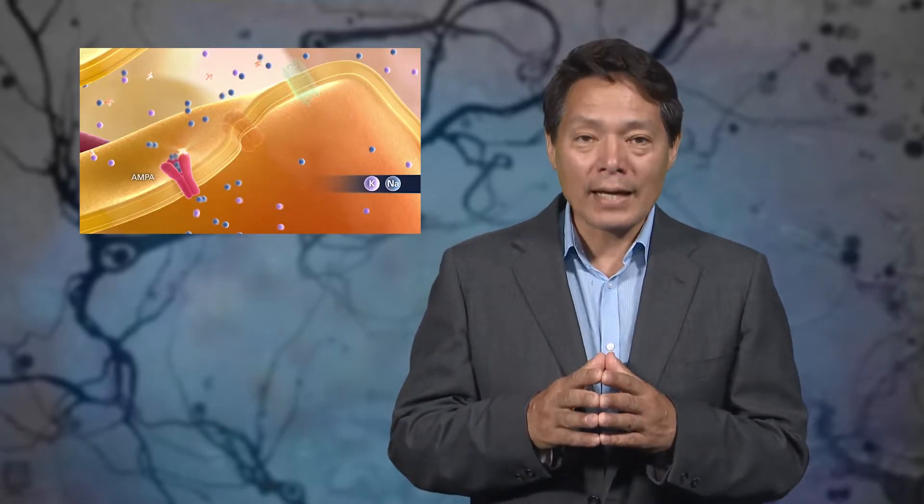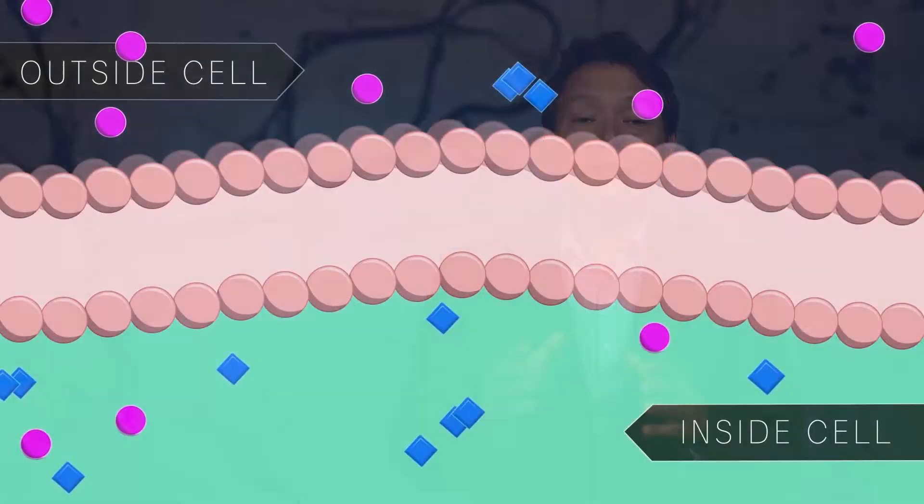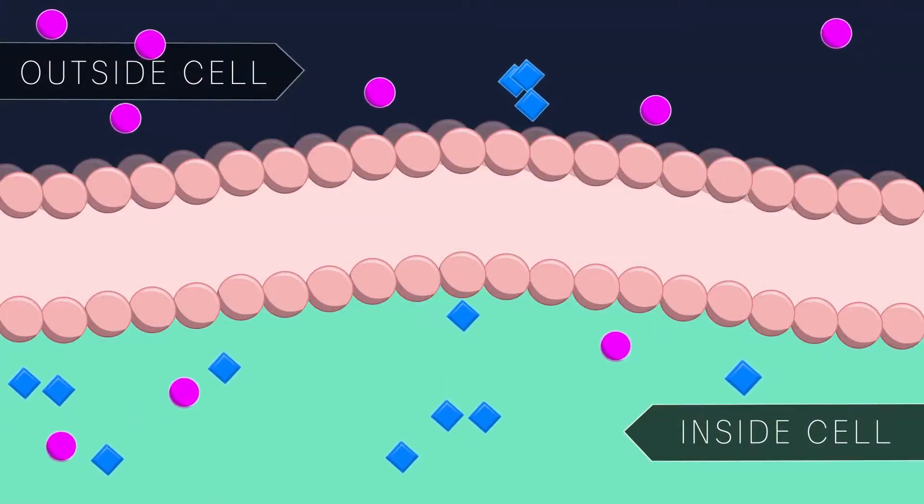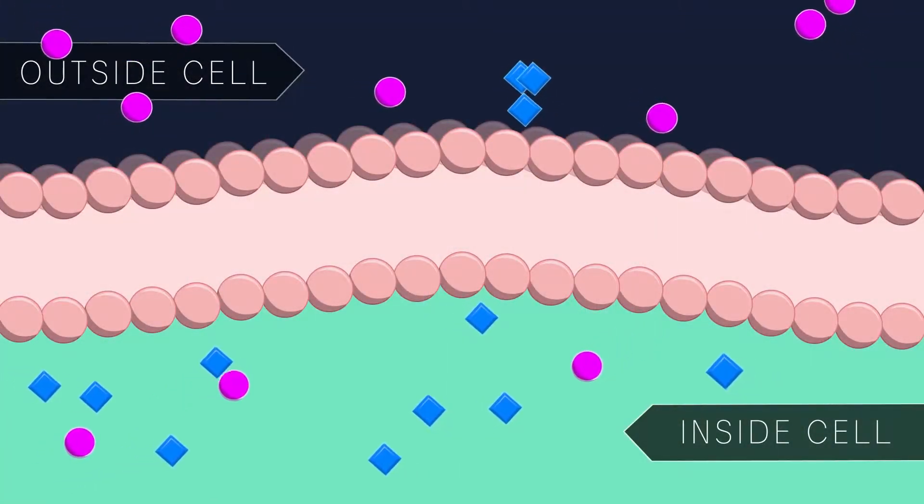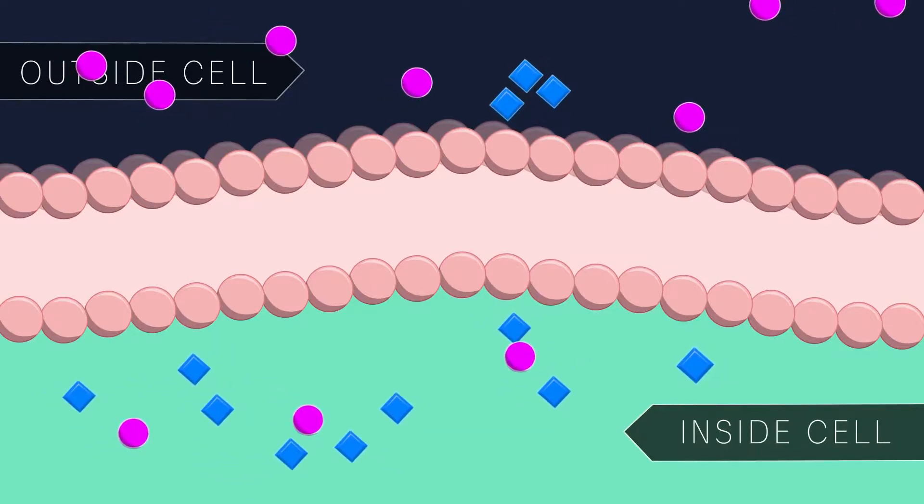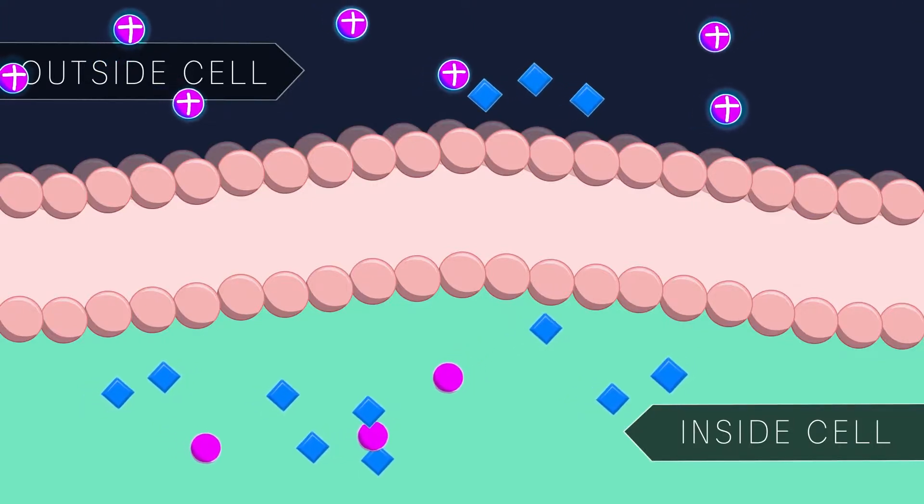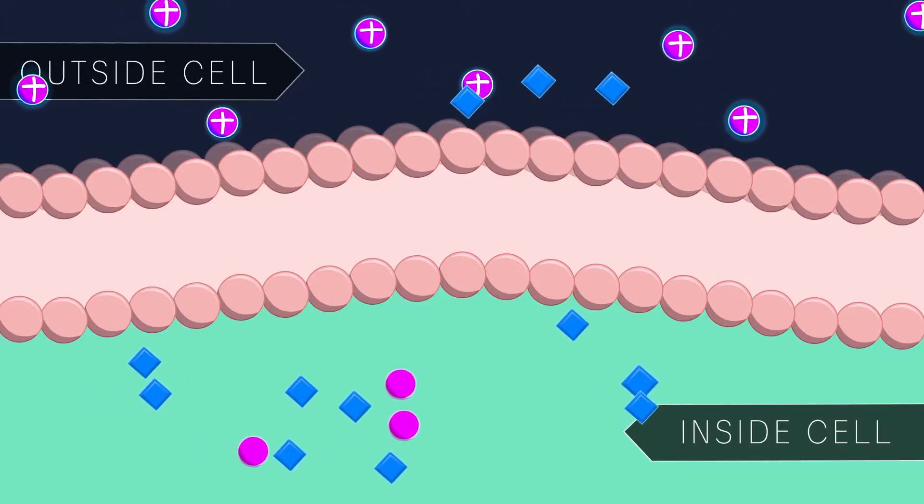When a neuron is alive, it actively keeps the voltage across its membrane far from equilibrium. This allows neurons to do important things like fire. Living neurons tend to have a negative resting potential. This means that even in the absence of input, neurons are far from equilibrium. In order to maintain a negative potential, there have to be more positively charged ions outside the cell than inside of it or more negatively charged ions inside the cell than outside of it.